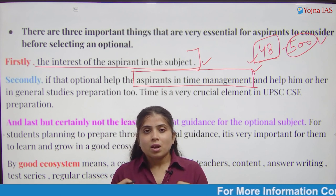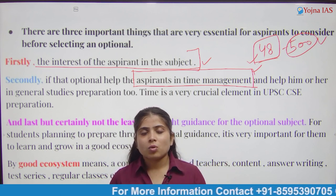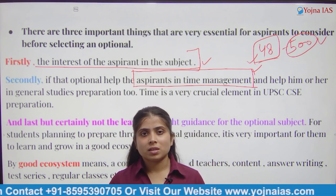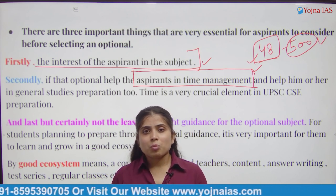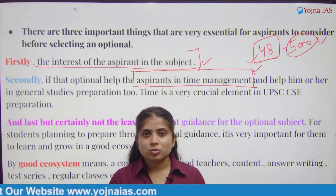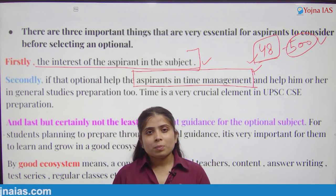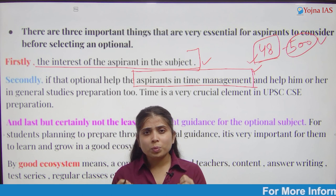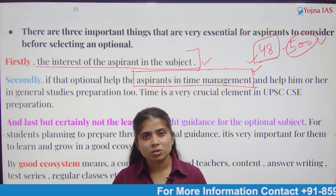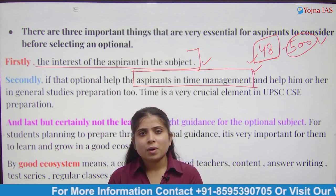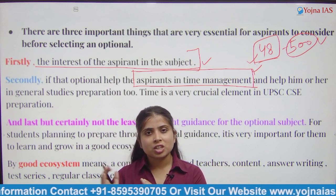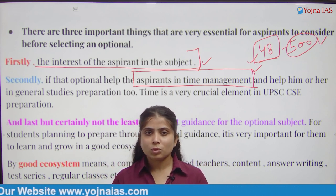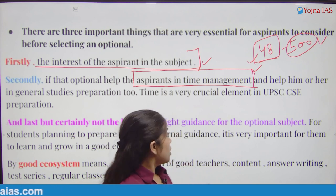Suppose you have taken commerce or accountancy — you may need to give 5 years to manage such an optional. If you think that you have done graduation in a subject and are just taking it casually, that will be wrong, because the optionals are important. You need to manage time accordingly and finish it alongside other subjects.